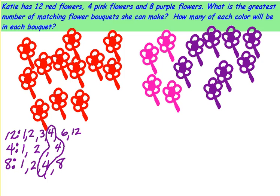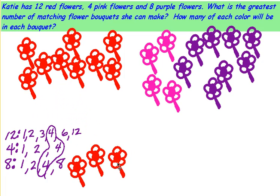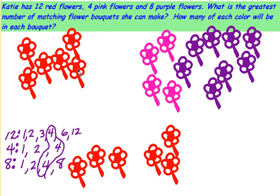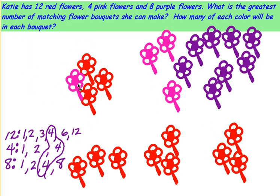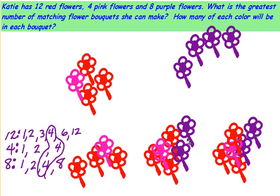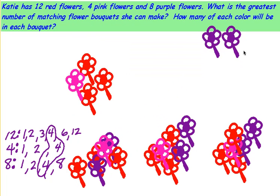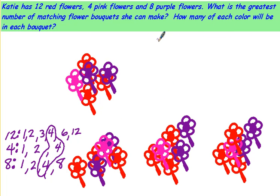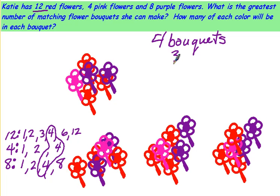So we know we can make four bouquets. If we spread these out into four bouquets, we'll have three red in each one, one pink in each bouquet, and two purples in each bouquet. We knew four went into 12 three times, so we'll have three red flowers in each. Four goes into four one time, so we'll have one pink flower in each. And four goes into eight two times, so we'll have two purple flowers in each bouquet.